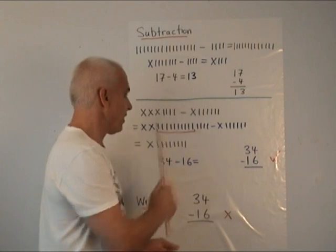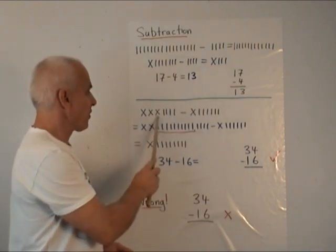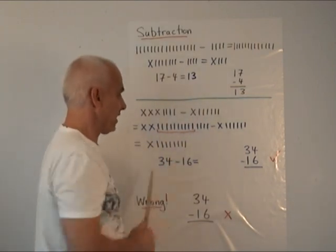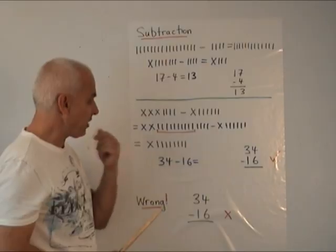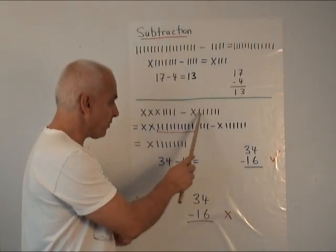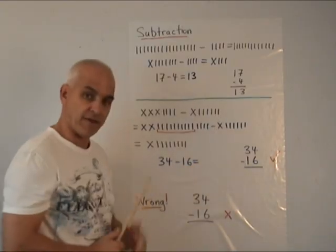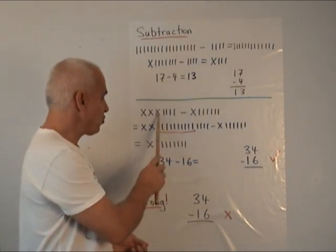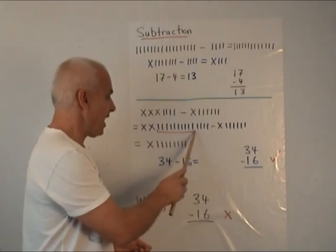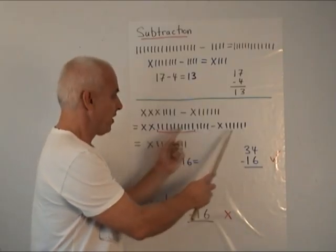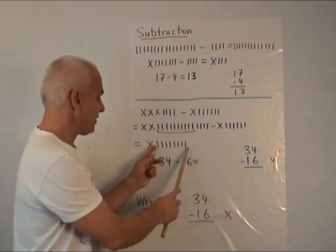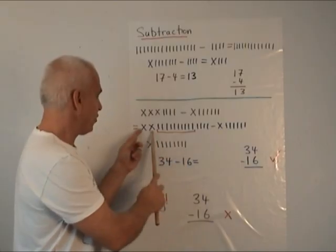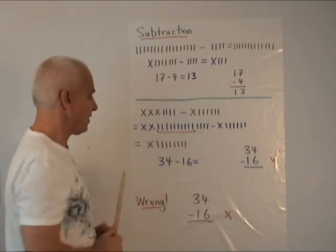Here's a more complicated example, where we have 34 minus 16. Now to make that subtraction with Roman numerals, we can't quite do it because we have 4 ones and we need to subtract 6 ones. That doesn't work. So we change one of the tens here for 10 ones, giving us 14 ones, which we can then subtract 6 from, giving us 8 ones. Only the 2 tens minus the 1 ten is a single 10.